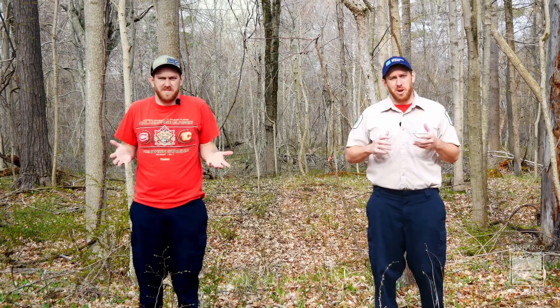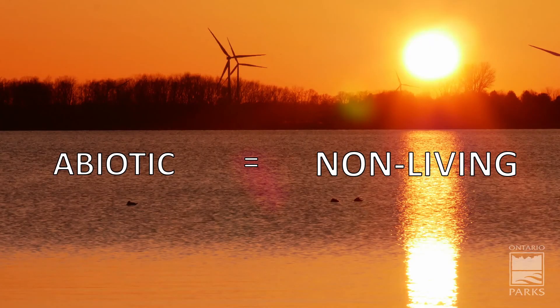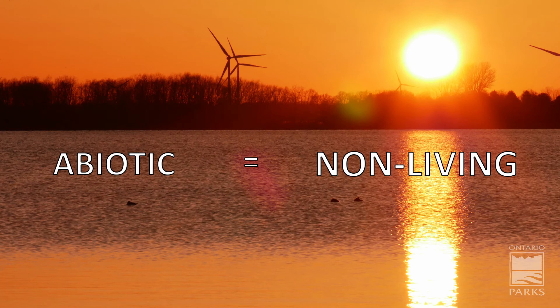These two elements affect each other greatly. You're probably wondering what are abiotic and biotic elements. Abiotic is everything that is not living, like our soils, the water, the sun, and the air.